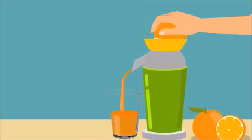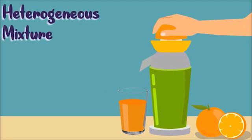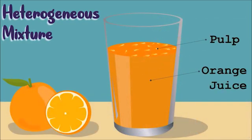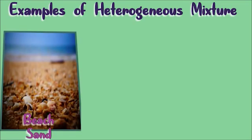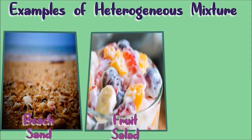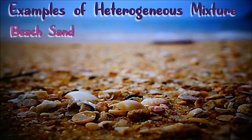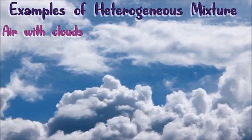A freshly squeezed orange juice or dalandan juice is a heterogeneous mixture of juice and pulp — the pulp component floats in the juice component. Some other examples of heterogeneous mixtures are beach sand, fruit salad, and air with clouds. Beach sand is heterogeneous since you can see different colored particles. Air with clouds contains tiny droplets of liquid water.